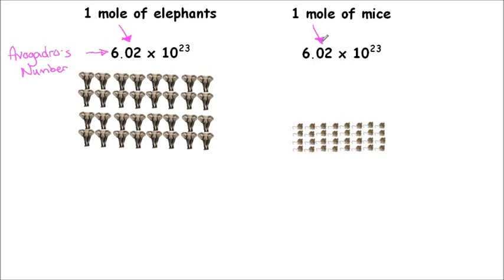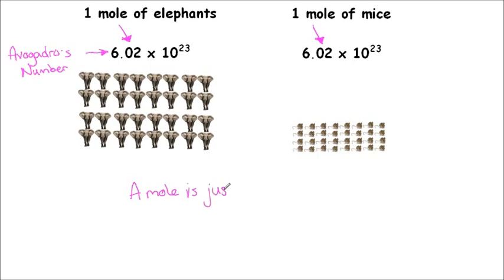Yes, they do have different masses, but the important thing is to remember that a mole is how many of something there are. That is why it relates to mass and why it relates to concentration. But the key thing you have to understand is that a mole is just a number — that's so important to understand.